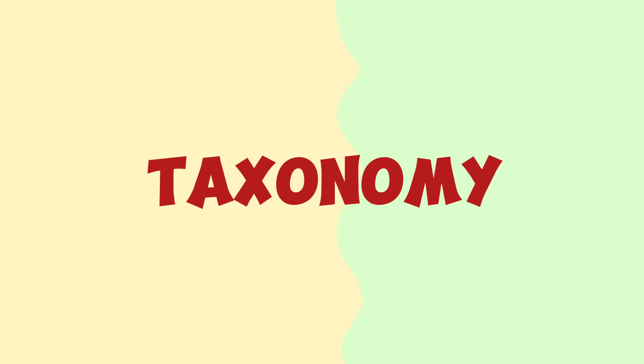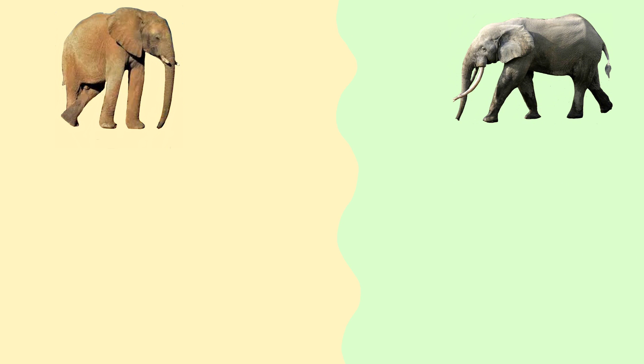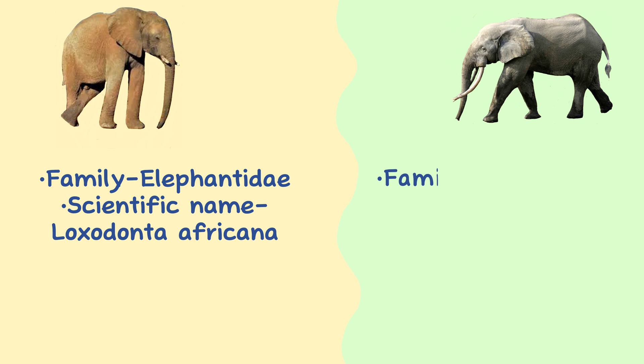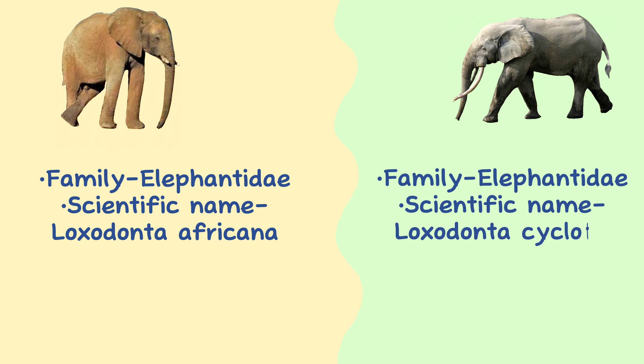Taxonomy. Both are different species of the same family Elephantidae. The scientific name of the African savannah elephant is Loxodonta africana, and the African forest elephant is Loxodonta cyclotis.